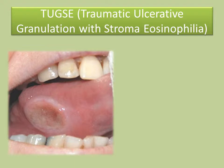Ulceration may present with a rolled white border of hyperkeratosis immediately adjacent to the area of ulceration. On occasion, underlying proliferative granulation tissue can result in a raised lesion similar to pyogenic granuloma.